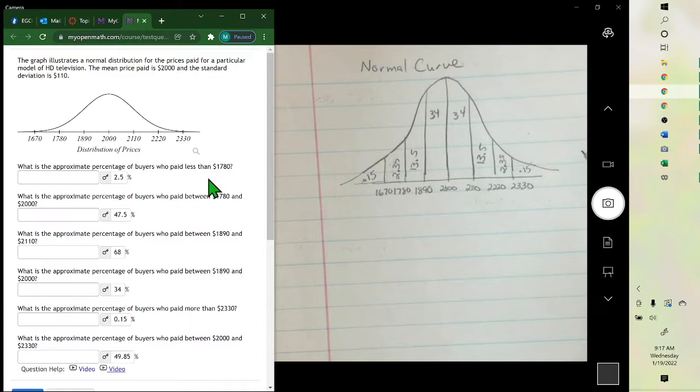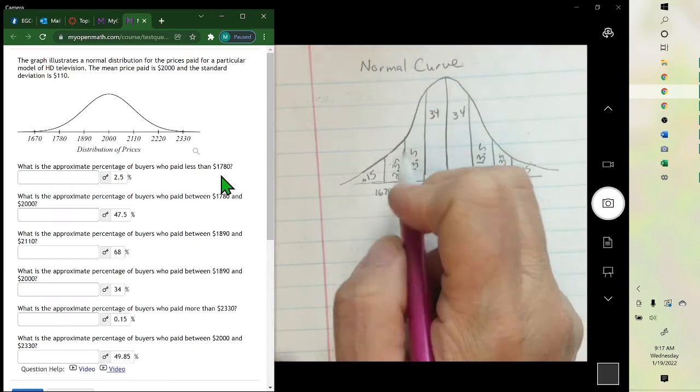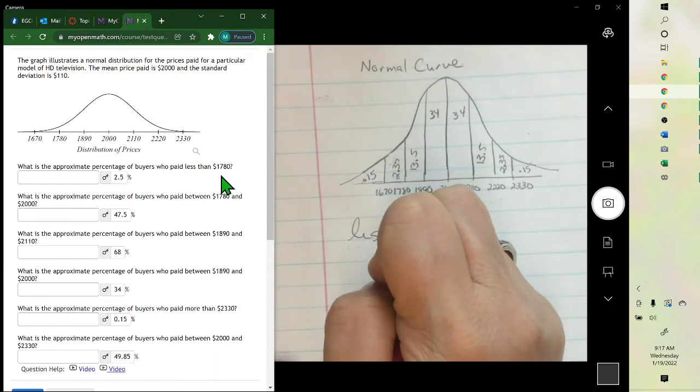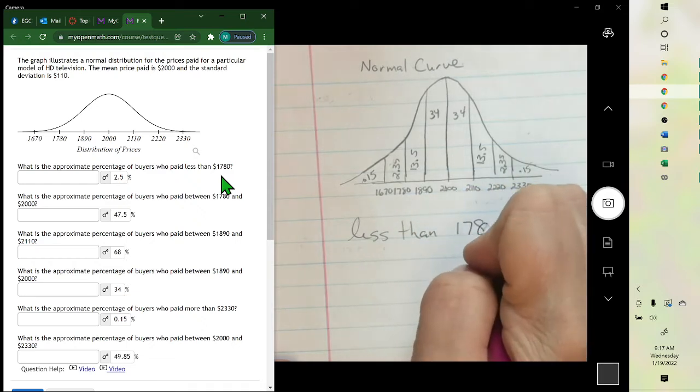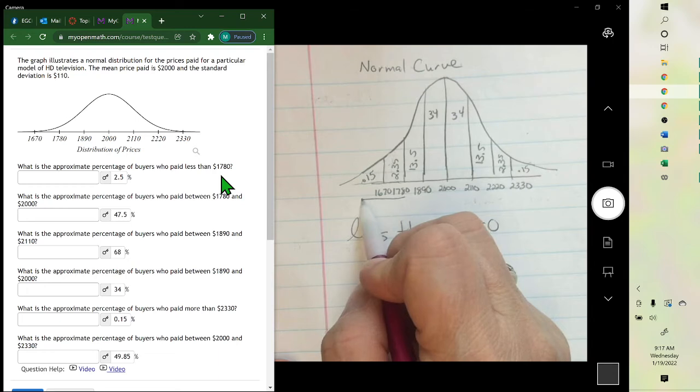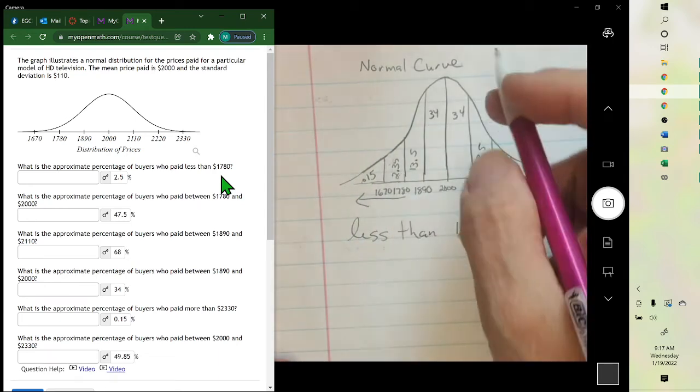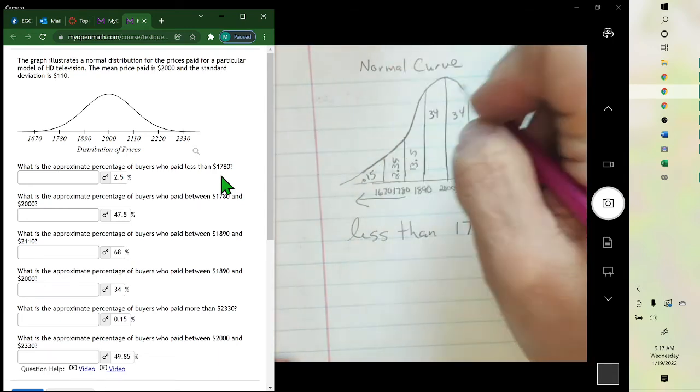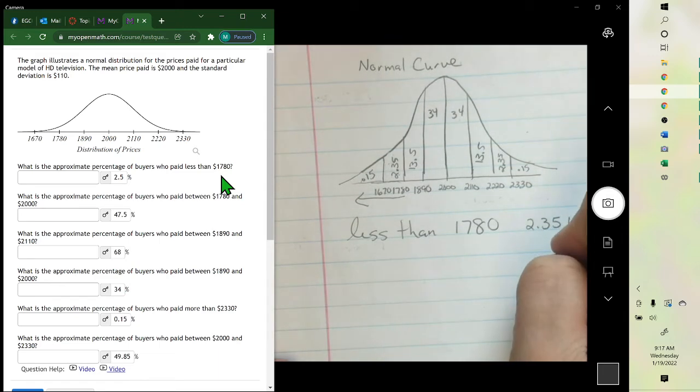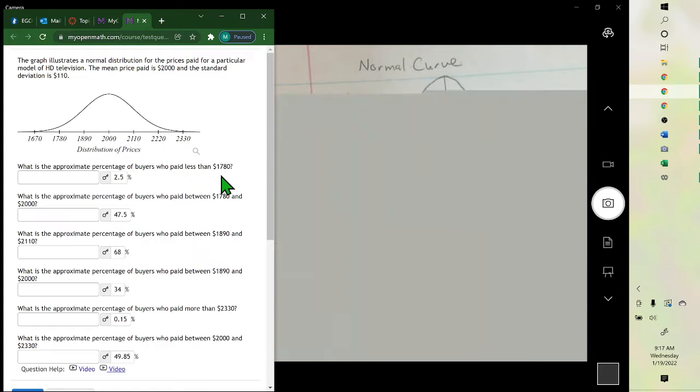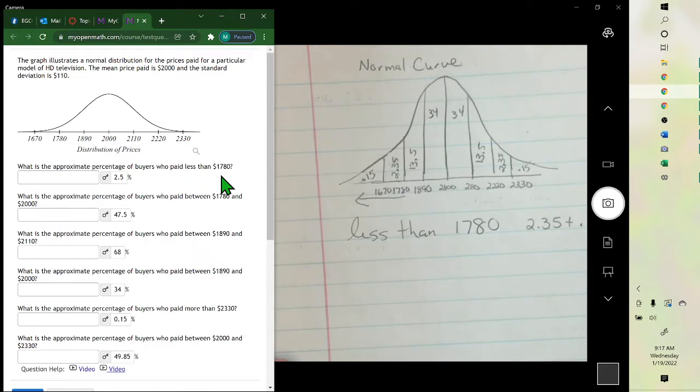So if we want the percent under the curve paid less than $1780, let's start here and go down. So it would be the 2.35 plus the 0.15 percent. 2.5%. So 2.5% are less than $1780.